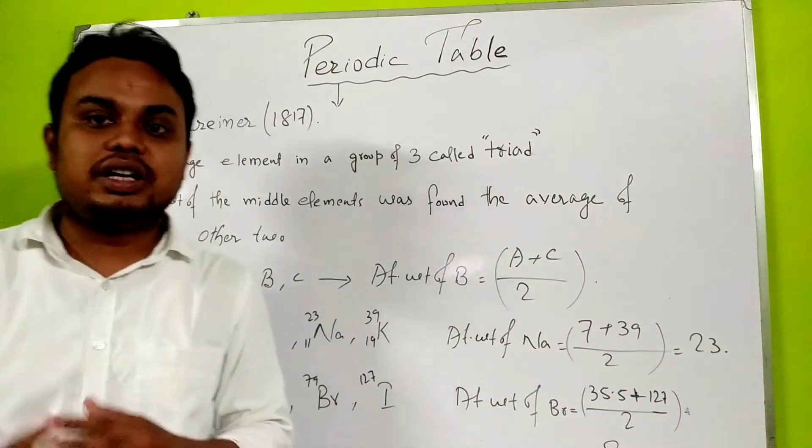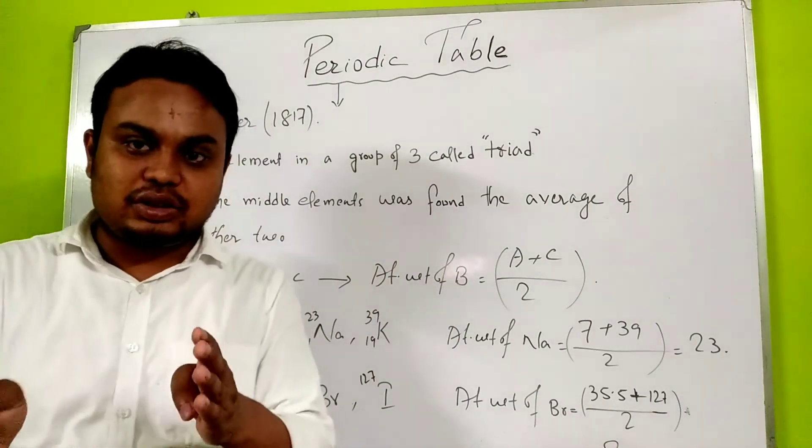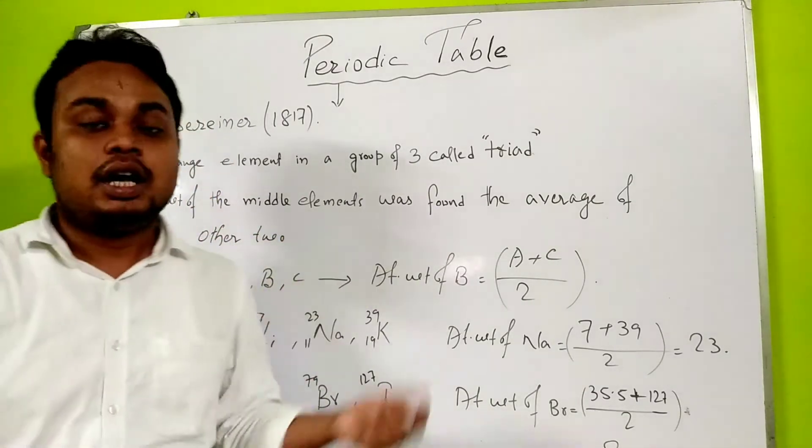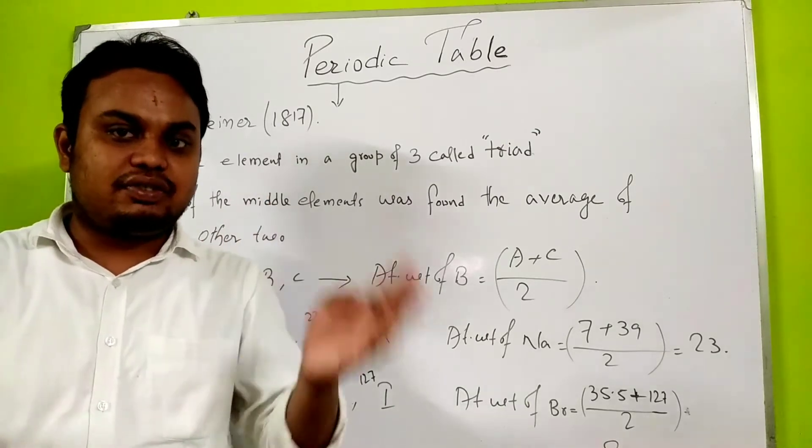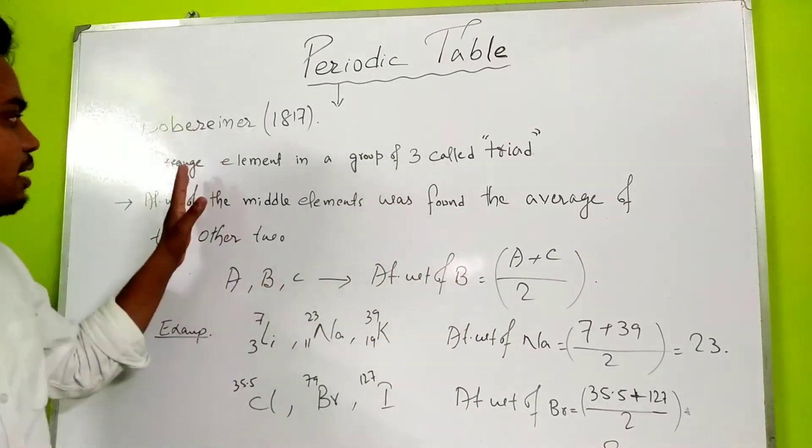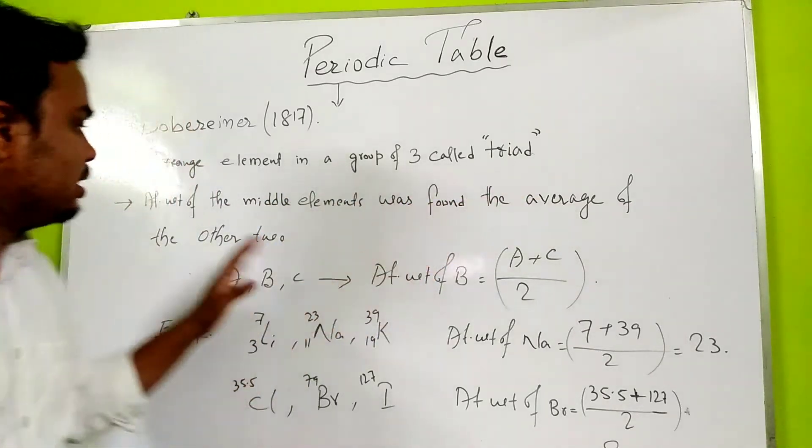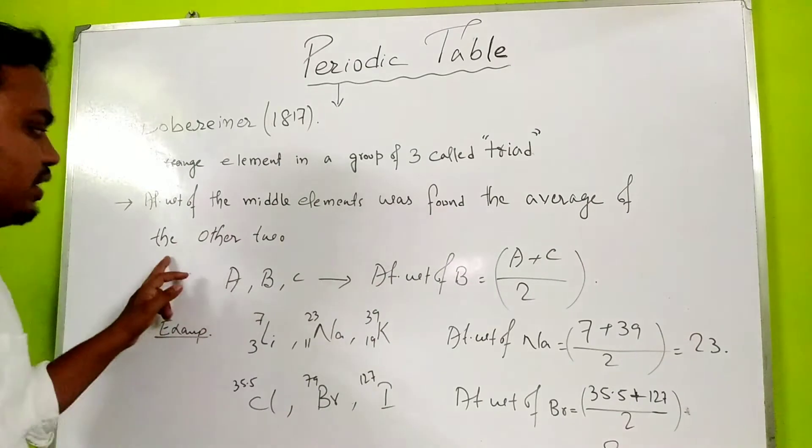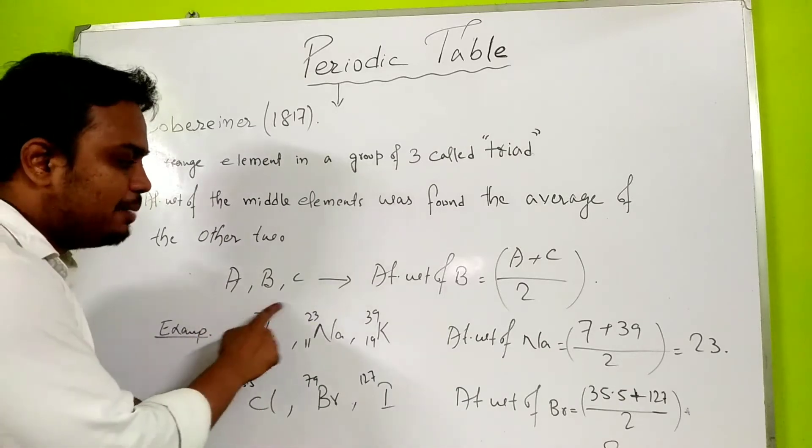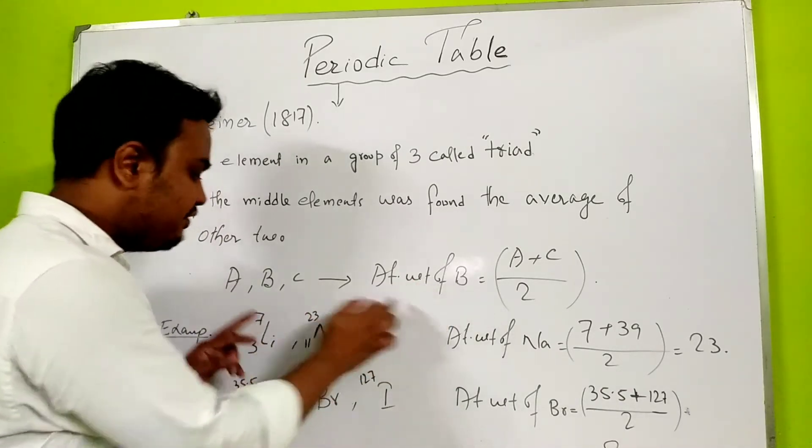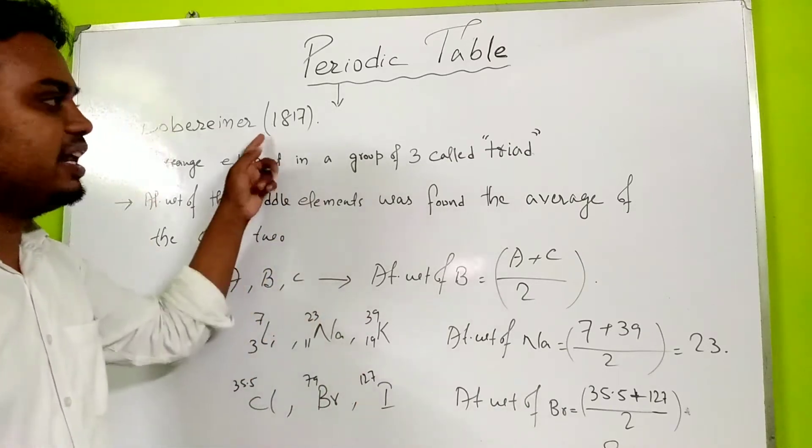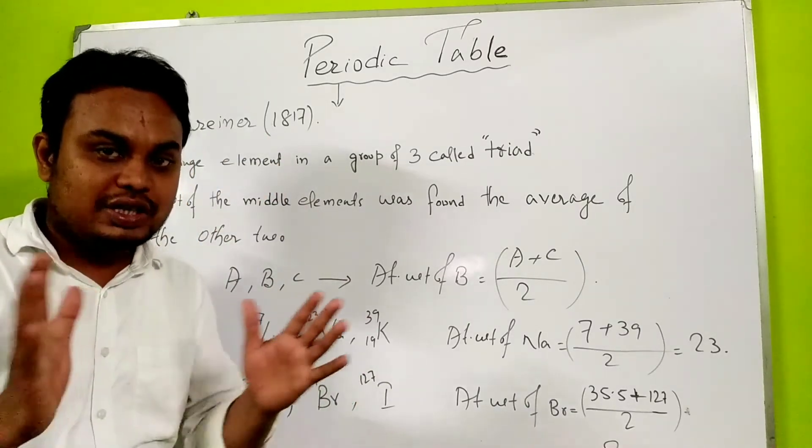Döbereiner arranged elements in groups of three, called triads. He said that the atomic weight of the middle element would be the average of the first and third elements. For example, if we have three elements A, B, and C, and the atomic weight of B is the average of A and C, then these three elements will have similar chemical properties.